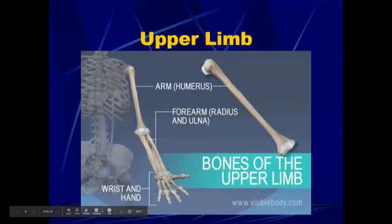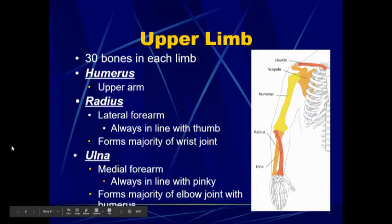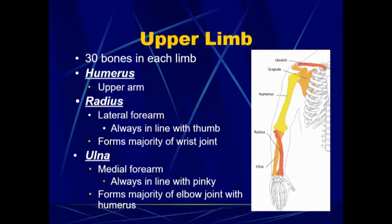The upper limb has 30 bones in each limb. We have the humerus, which is the upper arm bone. And then the forearm bones are the radius and the ulna.